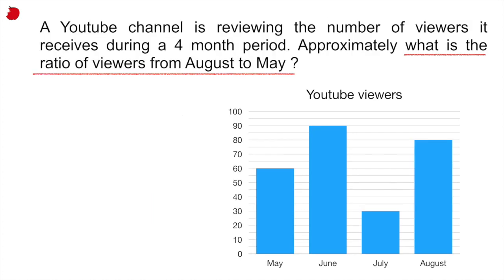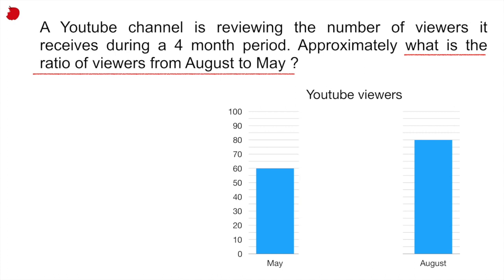So if you look more specifically, it's telling you the YouTube viewers in May, June, July, and August. This is what you're looking at. So if we go back to our question, it's telling us what is the ratio of viewers from August to May? So since they're telling us August to May, what I'm going to do is just block these two months in the middle out so you don't get confused. And it's telling us again, ratio of viewers from August to May, not May to August, August to May.